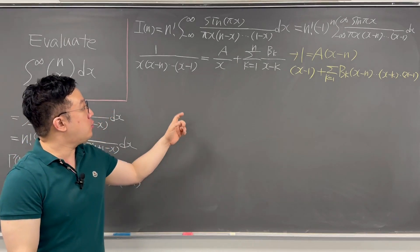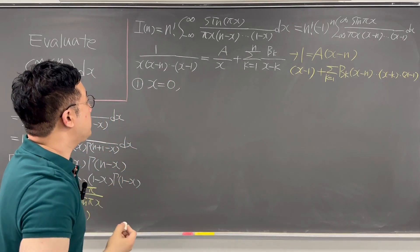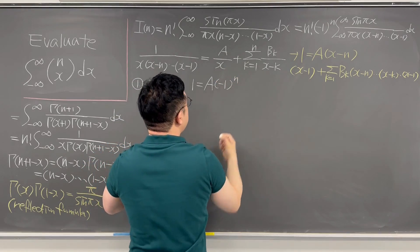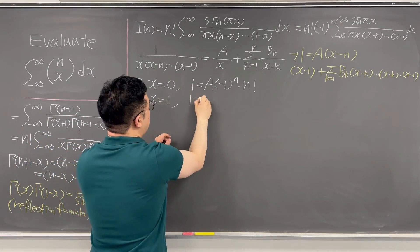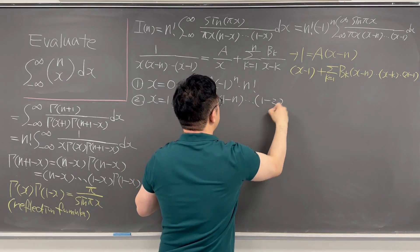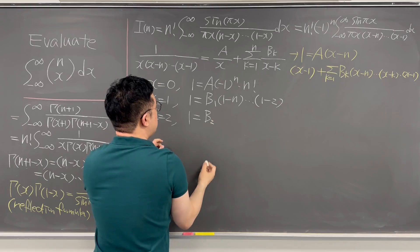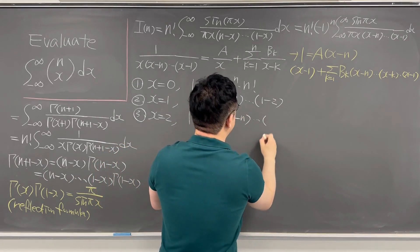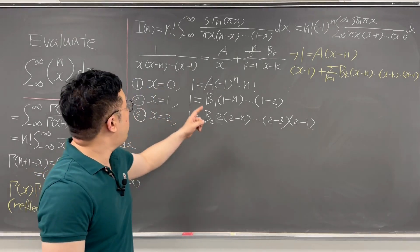We consider when x=0, x=1, and x=2. When x=0: 1 equals A times (-1)^n times n factorial. When x=1: 1 equals B_1 times (1-n) times ... times (1-2). When x=2: 1 equals B_2 times 2 times (2-n) times ... times (2-3) times (2-1). Using all of this, we can rewrite I_n.